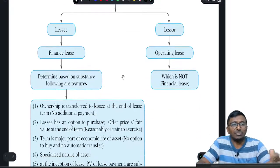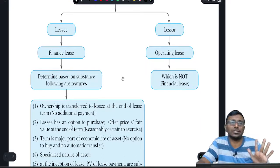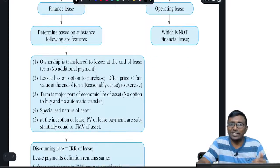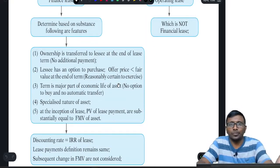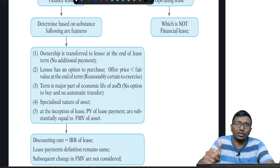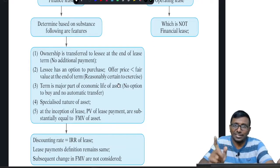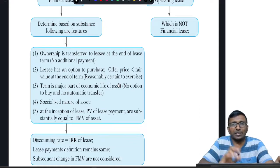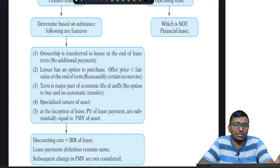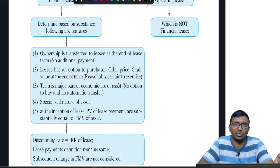How do you decide whether risks and rewards are with the lessor or lessee? They have given five features, which are the same as Accounting Standard 19 — nothing new. Feature one: ownership is transferred to the lessee at the end of the lease term automatically, without any extra payment, once all lease payments are cleared — exactly like a hire purchase situation.